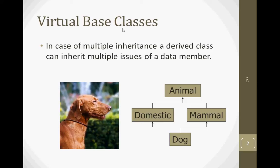For example, Domestic and Mammal are subclasses — that is, classes inherited from Animal. Dog is following multiple inheritance: dog is a mammal and dog is a domestic animal. So when the dog class is created, the problem is that Animal is a class that has data members, and both Domestic and Mammal inherit from it. We can avoid this problem by using virtual base classes.